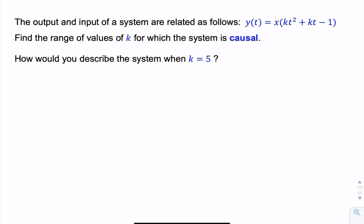We can start with that as our criterion. We can say kt squared plus kt minus 1 has to be less than or equal to t.